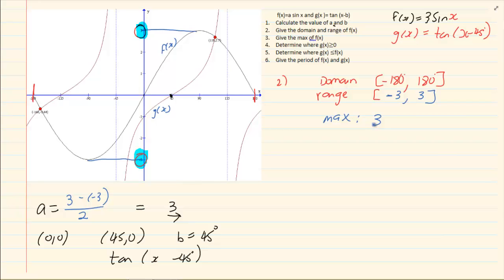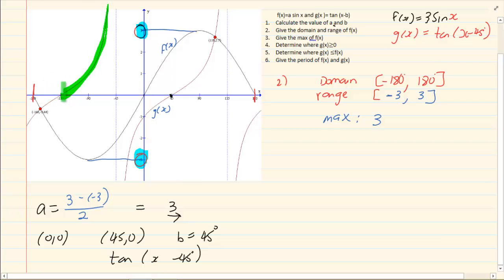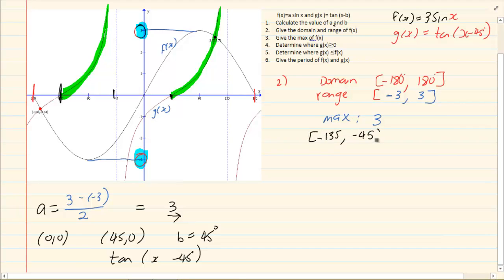Now it says determine where g(x) is greater than 0. g(x) is the tan graph. Greater than 0 means it is on top of the x-axis because y is positive. So the answer is from −135° up to just before −45° — because it is an asymptote it is a round bracket. Then again from 45° and just till before 135°, again a round bracket because of the asymptote.